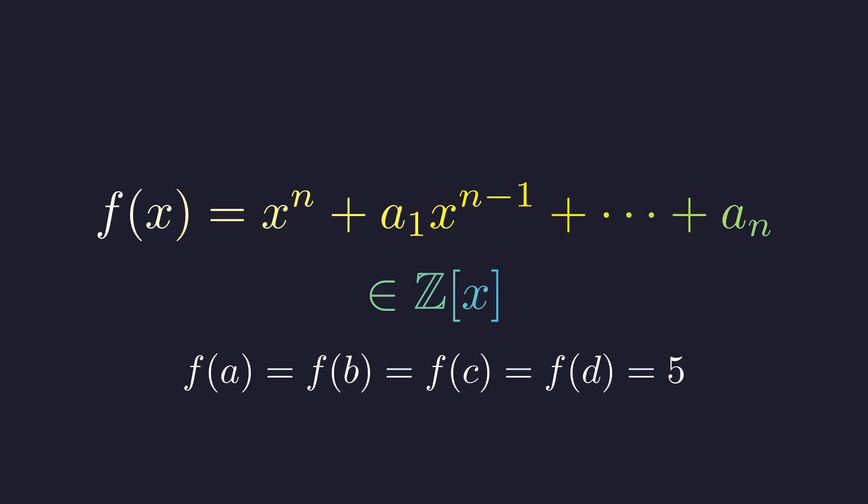Now here's what makes this interesting. We know that when we plug in four different integers, let's call them a, b, c, and d, our polynomial spits out the value 5 every single time. The question we want to answer is this: Could there be some other integer k where this polynomial equals 8?